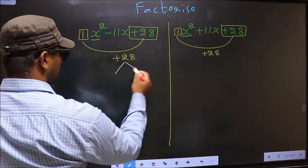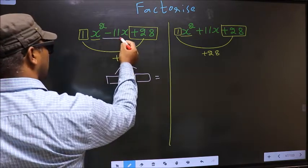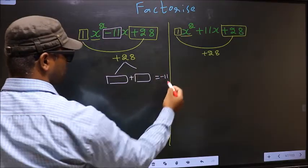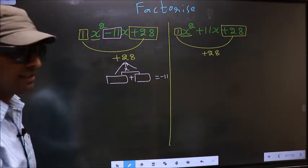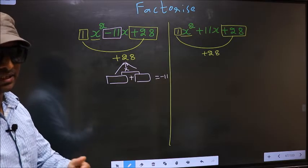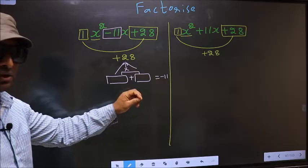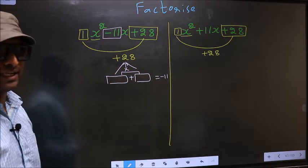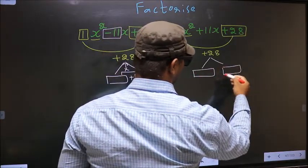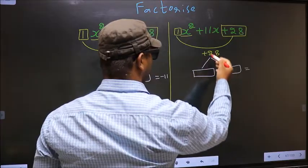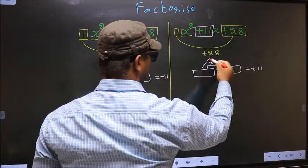Now you should look out for two numbers such that when you add these two numbers, you should get the middle coefficient, that is minus 11 for the first expression, and plus 11 for the second expression. And also, when multiplied, you should get plus 28.